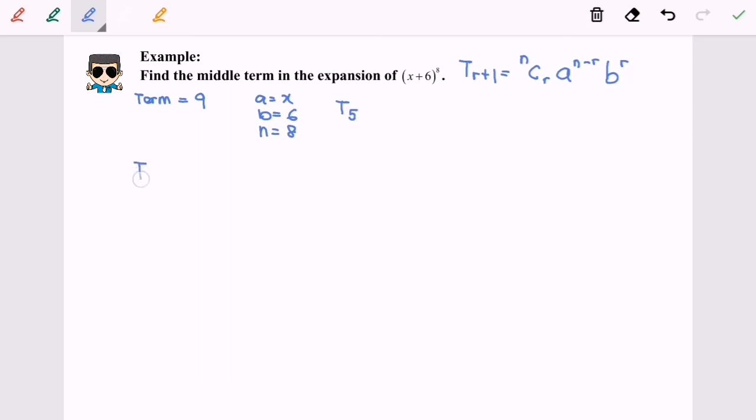So T5. From here we get the hint that r will equal 4 because r plus 1 equals 5. So r equals 4. Using the formula, n equals 8, C4.